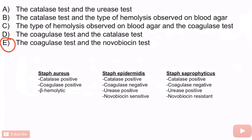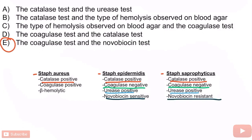Let's discuss why E is the correct answer and why the others are incorrect. All three organisms — Staph aureus, Staph epidermidis, and Staph saprophyticus — are catalase positive. However, Staph aureus is coagulase positive, while Staph epidermidis and Staph saprophyticus are coagulase negative. The novobiocin test distinguishes these two because Staph epidermidis is novobiocin sensitive, while Staph saprophyticus is novobiocin resistant. Every other answer option leaves us with an inconclusive diagnosis.